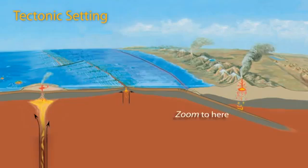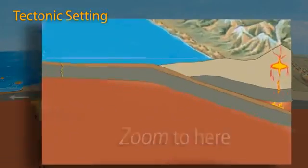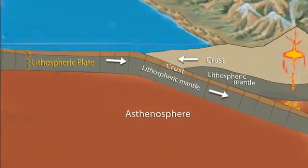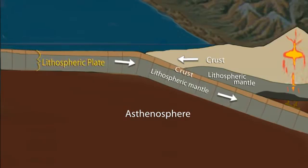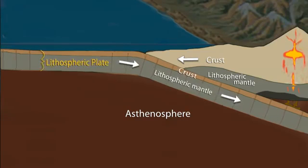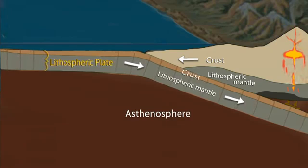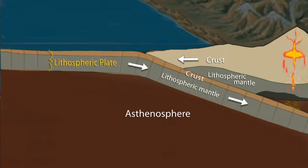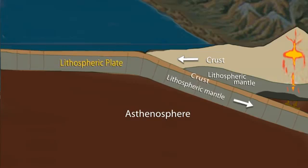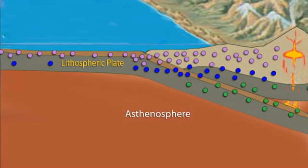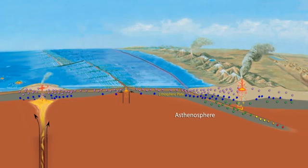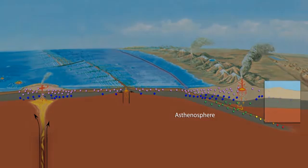Zooming in to a tectonic cross section, we see that the lithospheric plates are composed of crust on top of the outermost rigid part of the mantle. Although the mantle has a different composition and higher density than the crust, these two layers migrate as a single mechanical layer called a lithosphere or tectonic plate. This is where earthquakes occur as the brittle rock that makes up the plates fractures and breaks. The hotter, more ductile asthenospheric rock does not fracture to produce earthquakes.